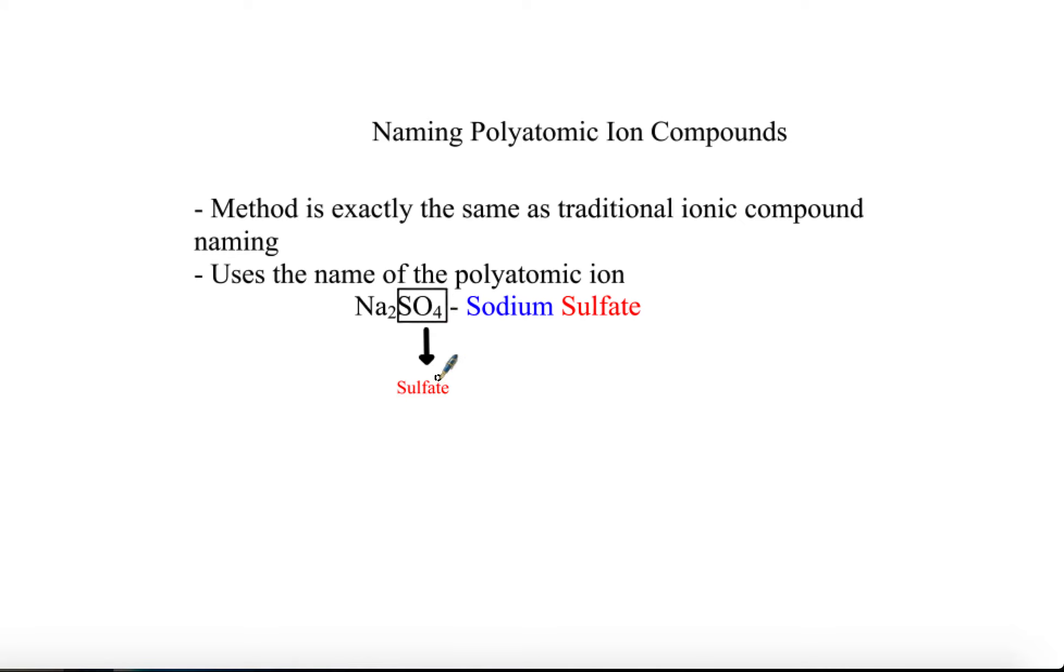What you really just want to be able to look for is spotting these polyatomic ion groups. SO4, PO4, OH, NO3, and so forth, are just some of these polyatomic ions to kind of start recognizing, because when you see them, you have to name them by that group.